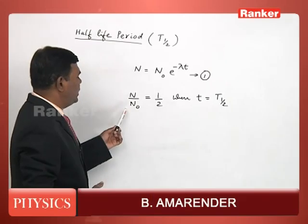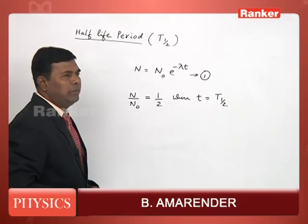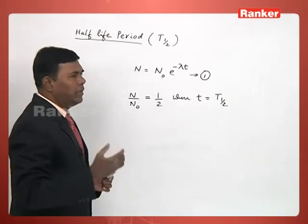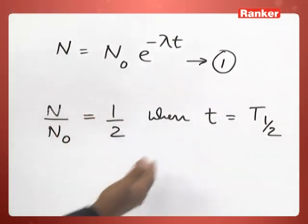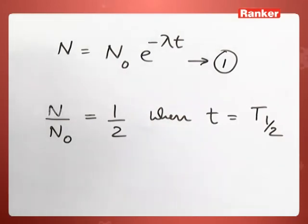N naught represents the initial number of nuclei of radioactive element and N is the number of nuclei at any instant of time. That ratio to be equal to half when time is half life period.